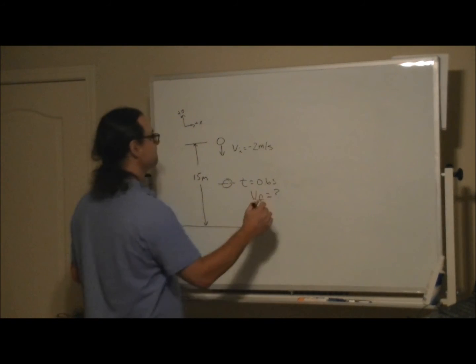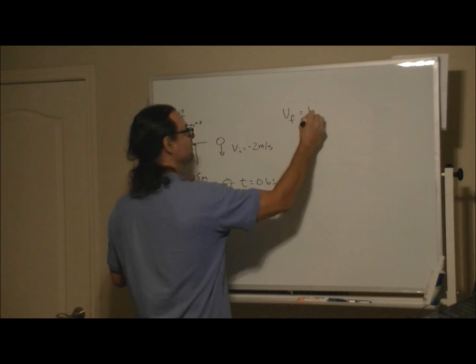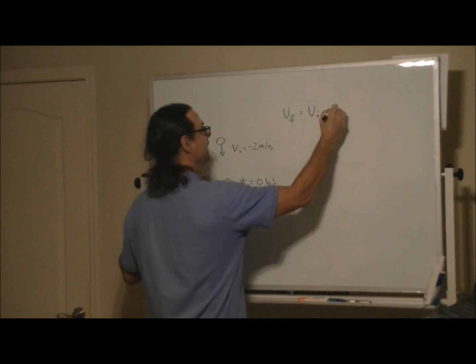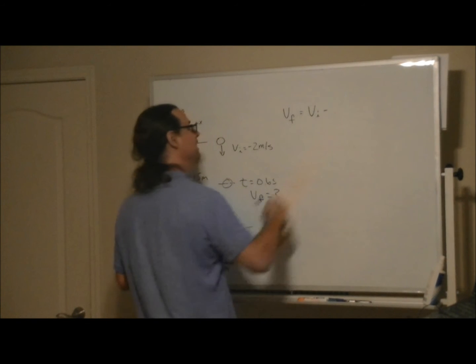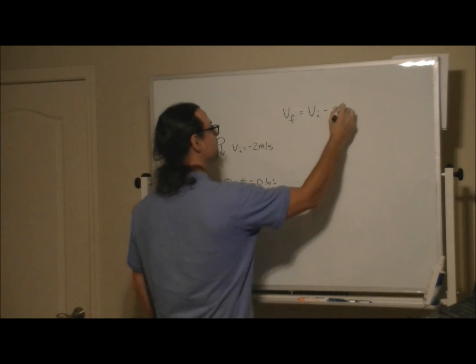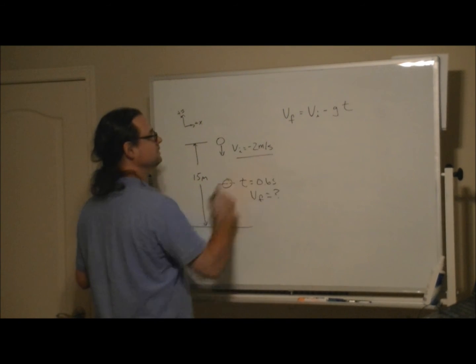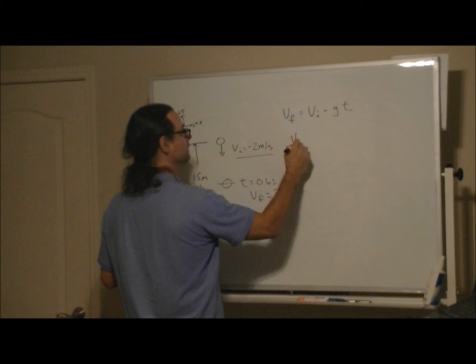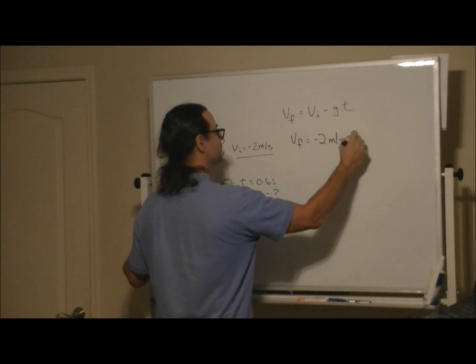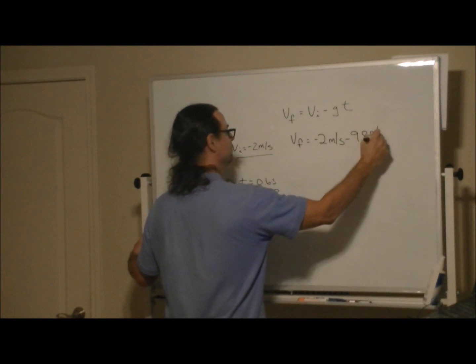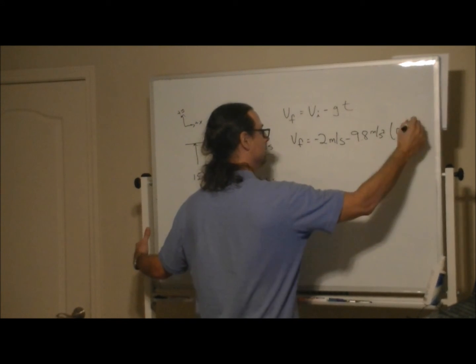We had the kinematic equation v final equals v initial minus gt. V initial is negative 2 meters per second, so v final equals negative 2 meters per second minus 9.8 meters per second squared times the time, 0.6 seconds.